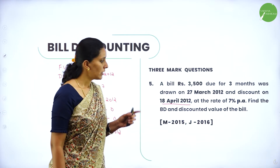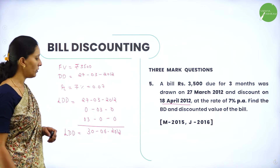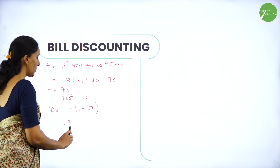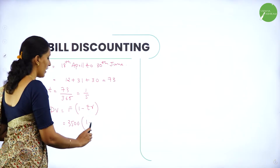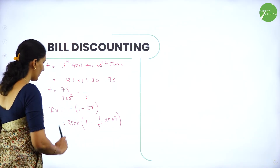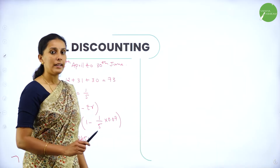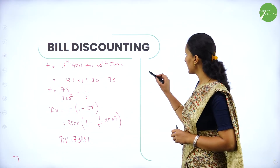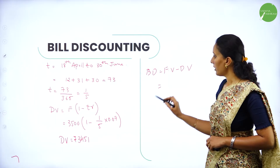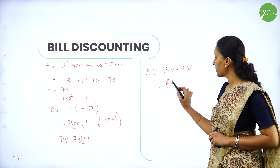Now finding discounted value: DV = FV × (1 − d×r) = 3500 × (1 − (1/5) × 0.07) = rupees 3451. Banker's discount = face value − discounted value = 3500 − 3451 = rupees 49.